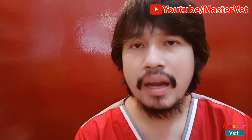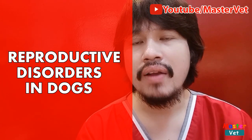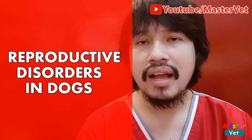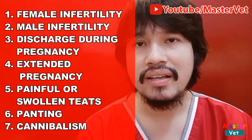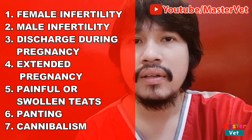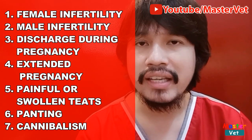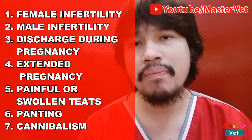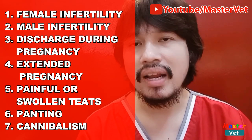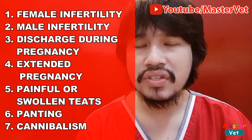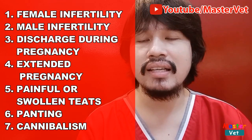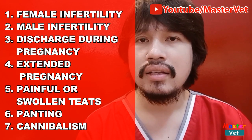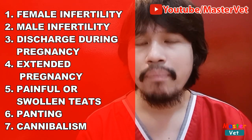Pag-uusapan natin ang reproductive disorders ng mga aso. Ano yung mga signs and disorders na kalimitan na nakikita natin kapag ang isang aso ay may reproductive disorders? May mga ilan-ilan tayo. Una, yung tinatawag na female infertility. Pangalawa, male infertility. Pangatlo is discharge during pregnancy. Number four, extended pregnancy. Number five is painful or swollen teeth, punting, and cannibalism. Isa-isahin natin sila.